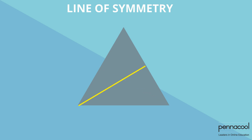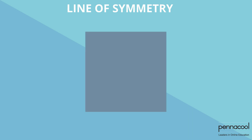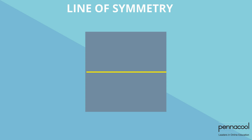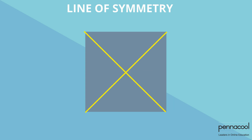Let's look at a square. How many lines of symmetry do you think the square shown has? If your answer was four, you are absolutely correct. We can cut the square vertically, horizontally, and diagonally both ways. All regular shapes have the same number of symmetry lines as they do sides.